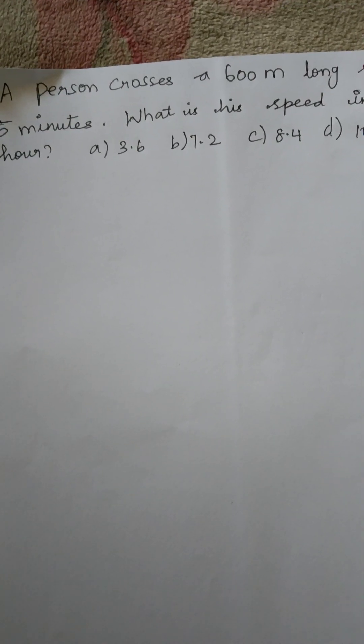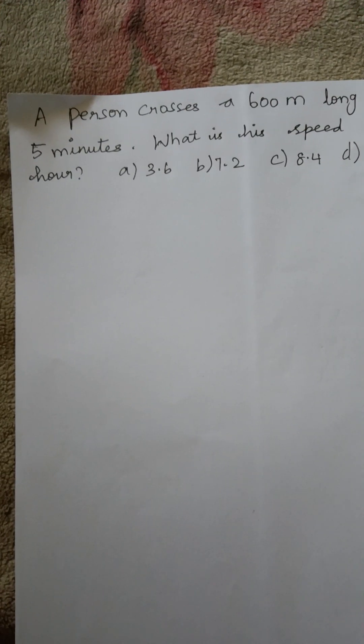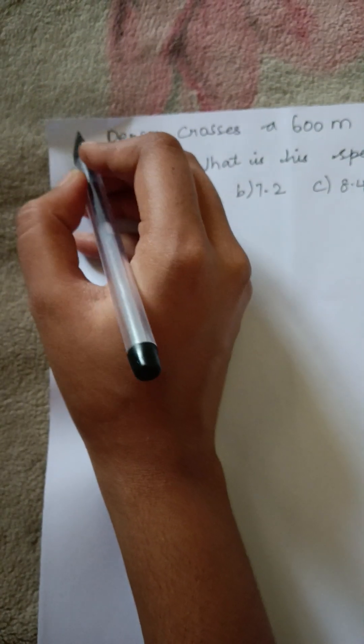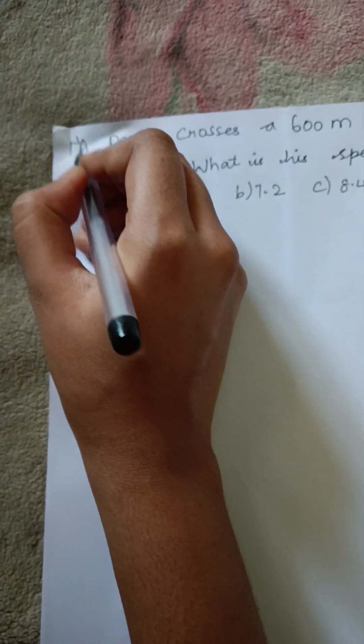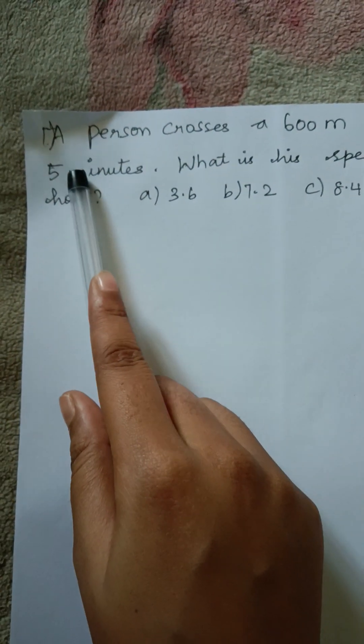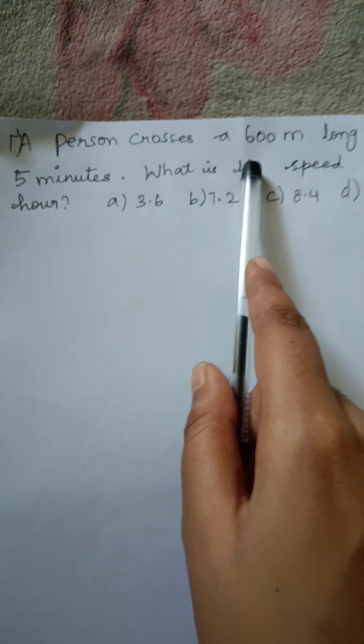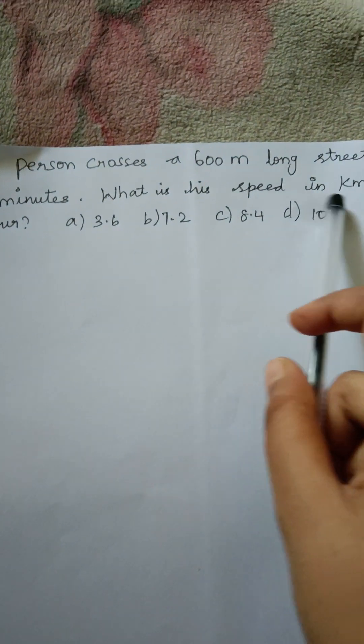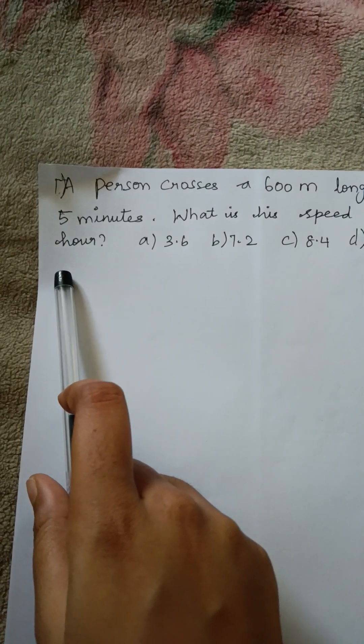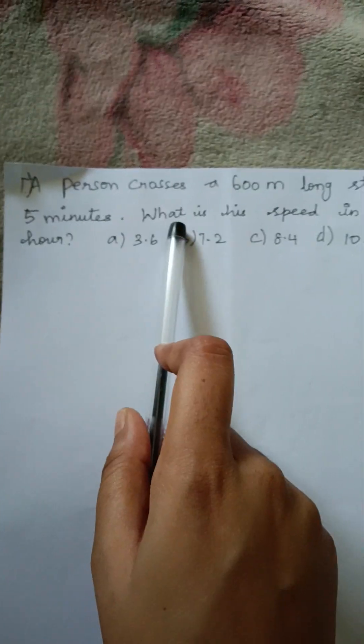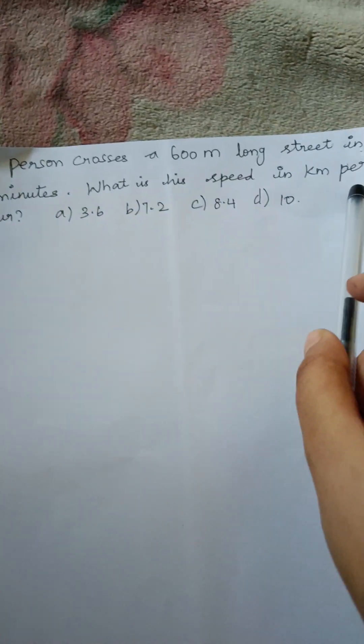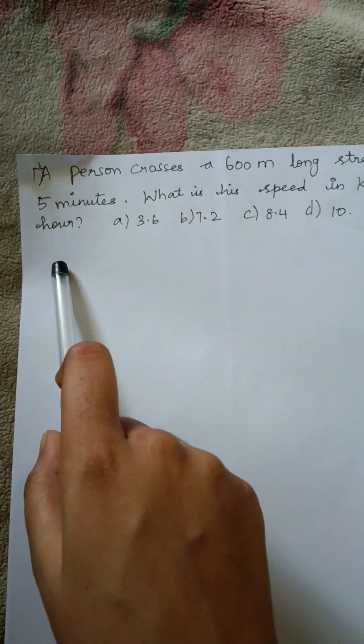The aptitude question is based on time and distance. The first question is: a person crosses a 600 meter long street in five minutes, what is the speed in kilometer per hour?